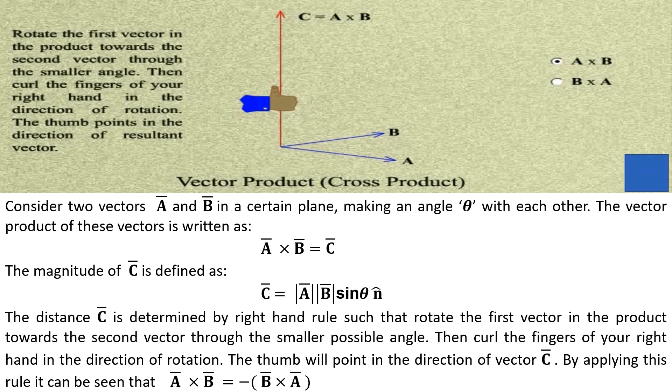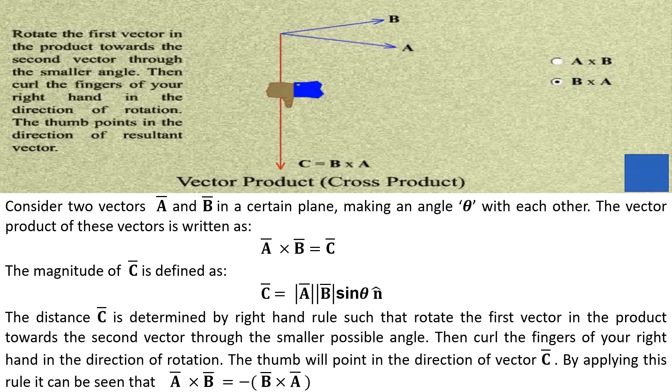The product of these vectors is written as: vector A into B equals vector C. The magnitude of vector C is defined as the product of magnitude of vector A into B into sine theta.